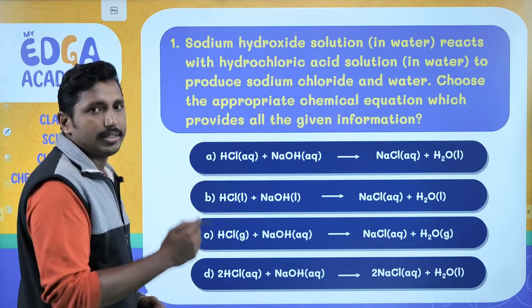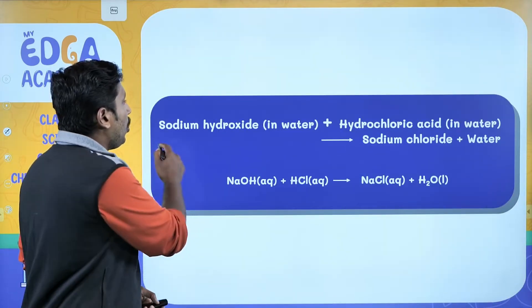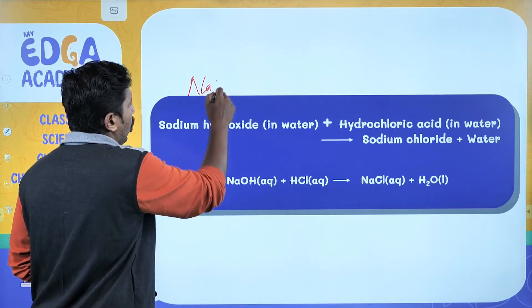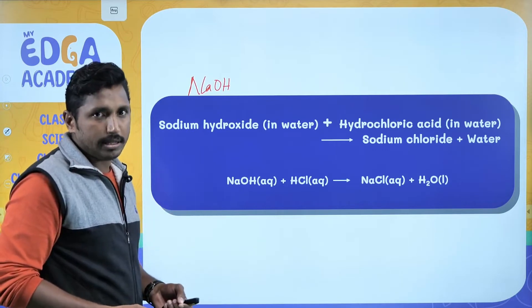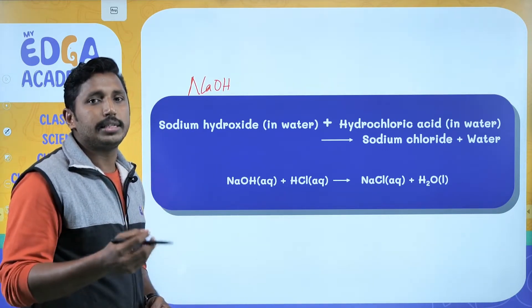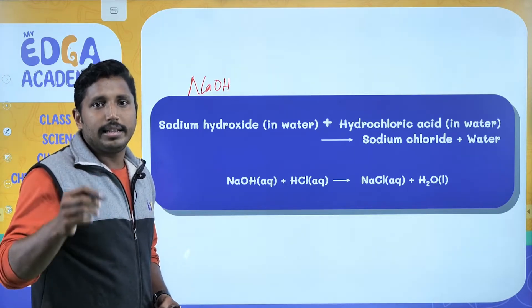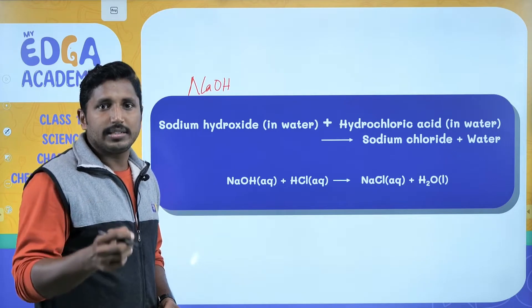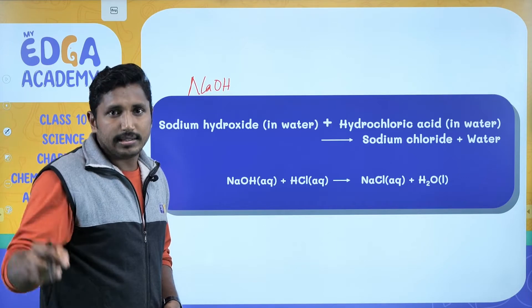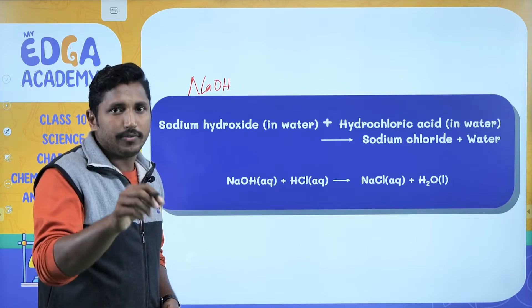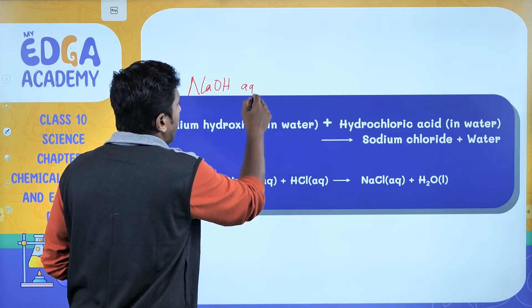In order to answer this question, I am inviting your attention to this slide. Here you can see sodium hydroxide, that is NaOH — it is in water, which means it is in the aqueous state. You have already learned that 'in water' means aqueous state. If it is a liquid, we write L; if it is a solid, we write S; and if it is in the gaseous state, we write G. So NaOH in water means it is in the aqueous state.